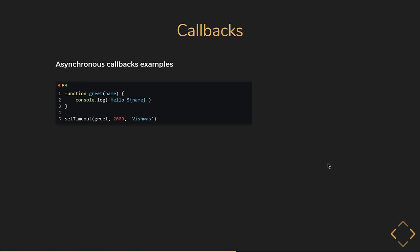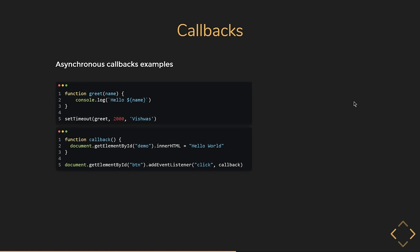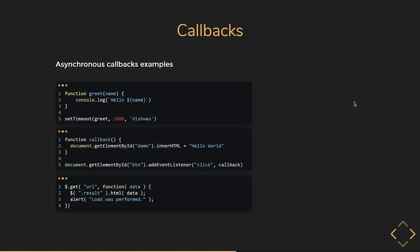Let's look at examples of async callbacks you might already be using. The first is setTimeout — here setTimeout acts as the higher-order function and greet is the callback function. When execution reaches line five, the greet function does not execute immediately — it waits for two seconds and then executes, making it an async callback. Another common usage is event handlers — JavaScript does not immediately run the callback; the function only runs when the user clicks the button. In jQuery, $.get takes a URL and a callback function which is called only after the data has been loaded.